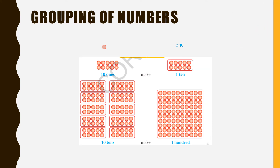To understand addition with regrouping, first we need to understand grouping of numbers. One object can be written as one. When ten ones are grouped together, it is called one ten. When ten tens are grouped together, they are called one hundred.